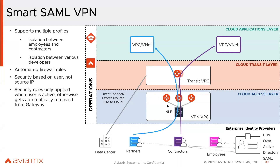When we program these rules to bring partners, contractors, or users into the network, they are created automatically. When those users disconnect, we will destroy these rules — they will not stay there forever. The solution also supports split tunneling, so you can bring everything into the cloud, or specify the subnets and destinations you want tunneled in, with the rest of the regular internet traffic going through the regular internet path.